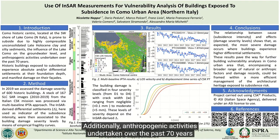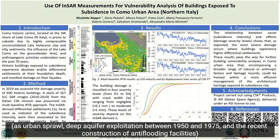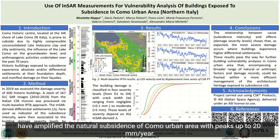Additionally, anthropogenic activities undertaken over the past 70 years — such as urban sprawl, aquifer exploitation between 1950 and 1975, and the recent construction of anti-flooding facilities — have amplified the natural subsidence of Como urban area with peaks up to 20 millimetres per year.